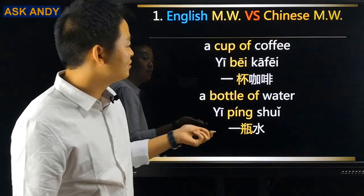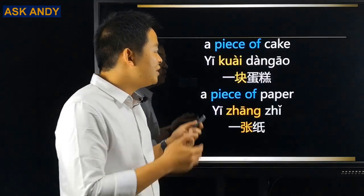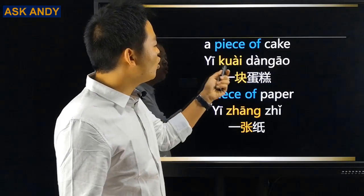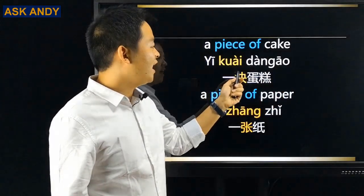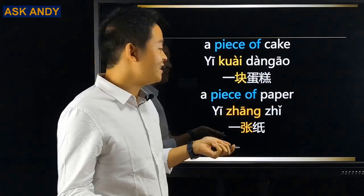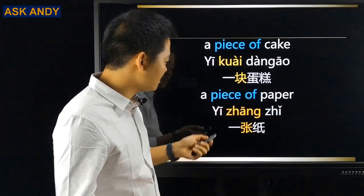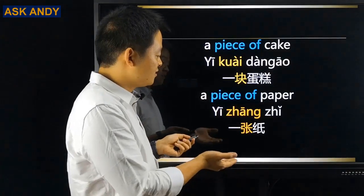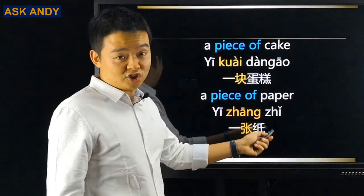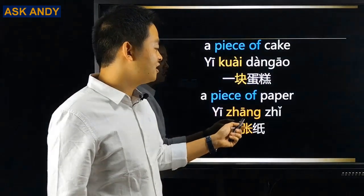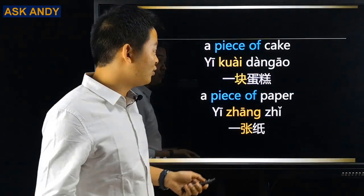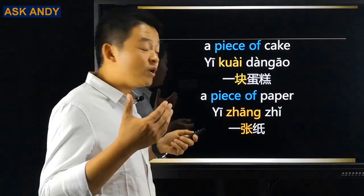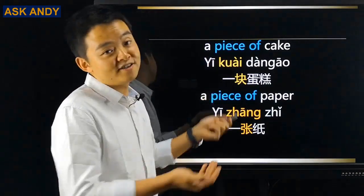But let's see another example. 'A piece of cake' — in Chinese it is 一块蛋糕. That is easy. But 'a piece of paper' — in Chinese we have a different one: 一张纸. So we have the same measure word in English, but we may have a different one in Chinese.